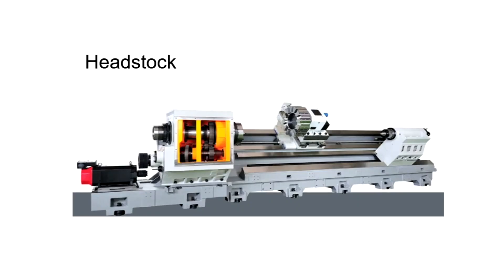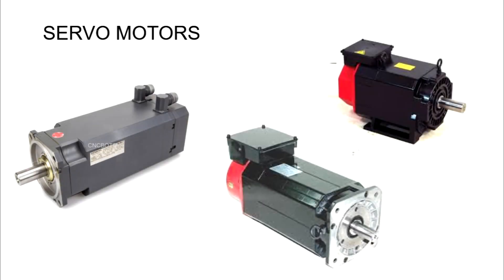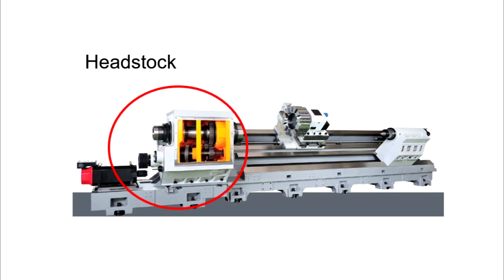At the left side of the spindle, the main spindle drive is connected. Normally in CNC machines, servo motors are used as spindle drives. At the right side end, the work-holding device is fixed. The whole assembly is known as headstock.